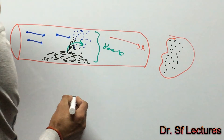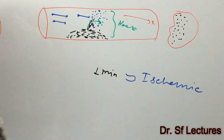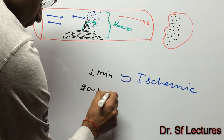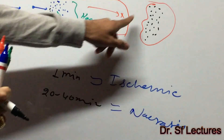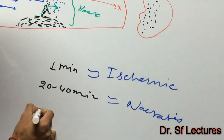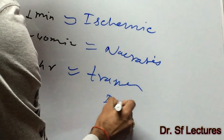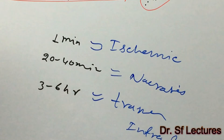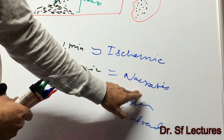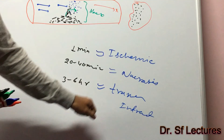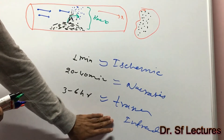Regarding the death of cells over time: from zero to one minute it will be ischemic — the cells are under stress but can be recovered. If blood does not supply for 20 to 40 minutes, that will be necrosis — cells completely die. If blood does not supply to that particular area from three hours to six hours, that is called transmural infarct. In ischemia, cells can recover; in necrosis, cells completely die; and in transmural infarct, the damage goes into the endocardium of the heart wall, damages the heart wall, and also disturbs the electrical pathway of the heart. These are the three types of cardiac muscle damage.